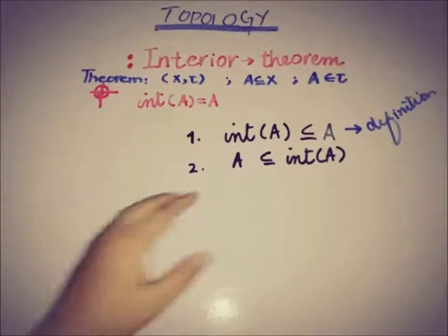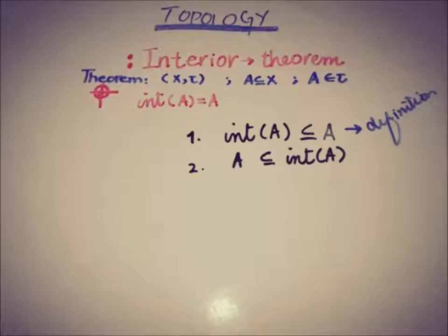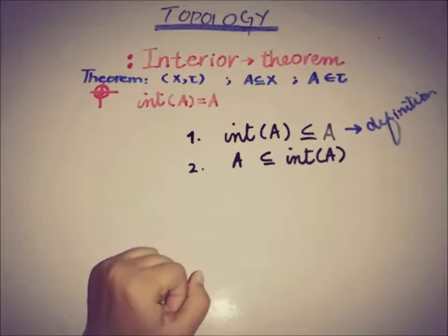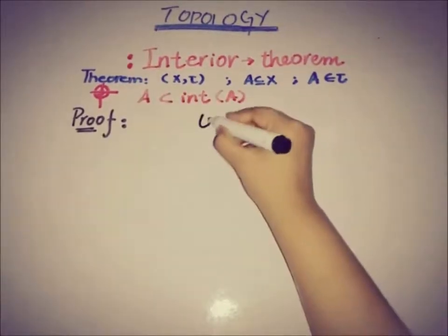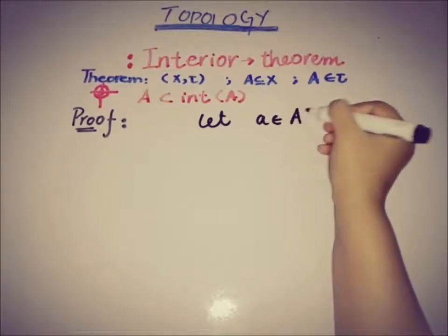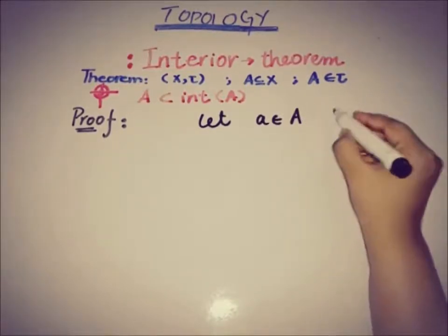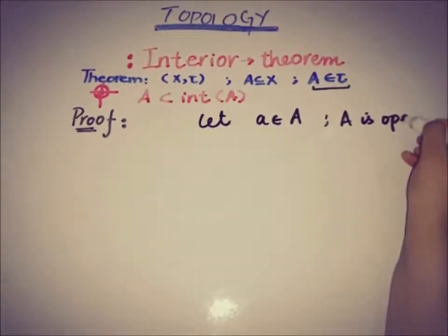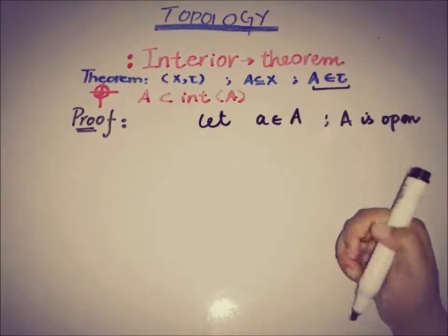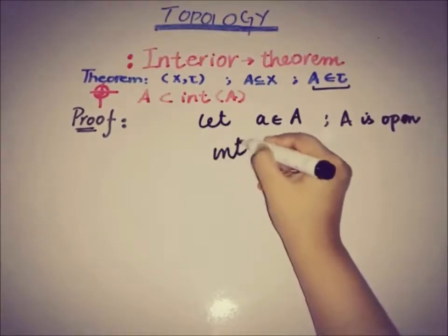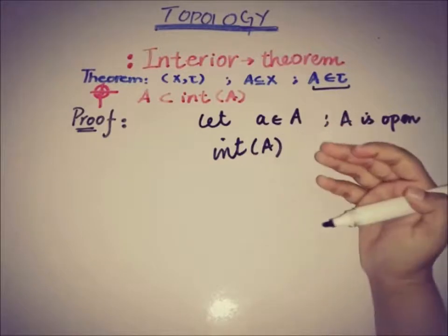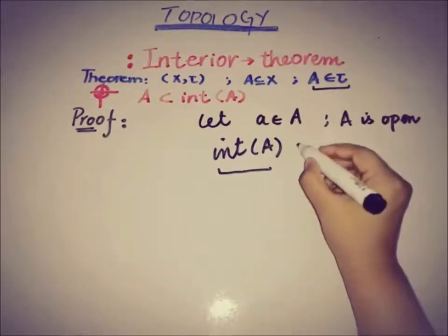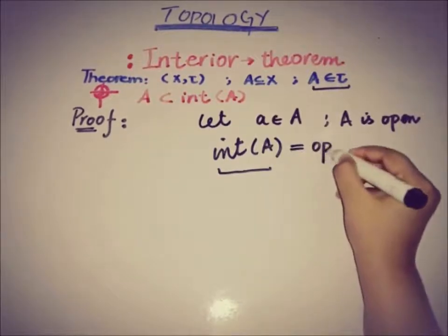So the only thing we have to prove is that A is a subset of the interior of A. Let a be a member of the set A. It is given that A is an open set. By the definition of the interior of A, we know that the interior of A is the union of all open sets contained in A, which implies that it is also an open set.